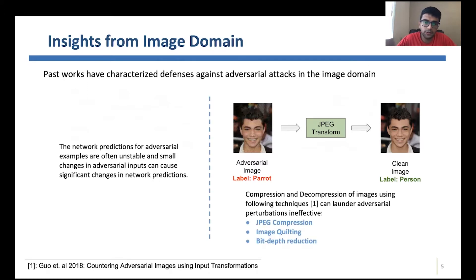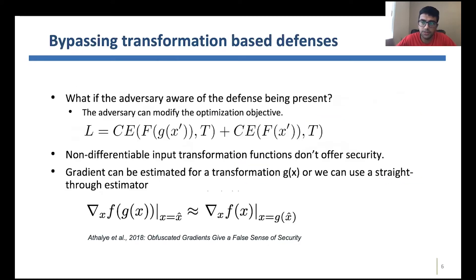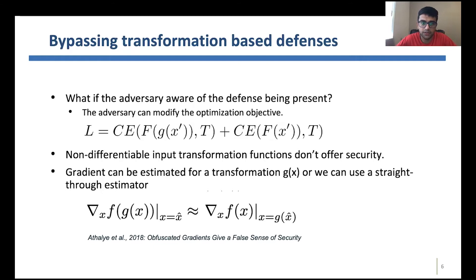However, people have also studied adaptive attacks to such defenses, where it is assumed that the attacker is completely aware of the transformation function being used as a defense. The attacker then modifies the objective to incorporate the transformation function in the attack loss function, allowing them to construct adversarial examples that are robust to that transformation. If the transformation function is not differentiable, the attacker can use techniques like the straight-through gradient estimator, and it has been shown that with a slightly higher allowed perturbation, successful adversarial attacks can still be constructed.